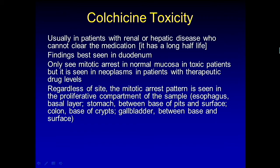The findings are best seen in the duodenum, presumably because it has the most turnover. The important thing is that you only see the cool mitotic arrest pattern in normal mucosa in toxic patients. But if a patient happens to have a neoplasm and is taking a therapeutic dose, you'll see just crazy stuff in the neoplastic process. Regardless of the site, you see the mitotic arrest pattern in the proliferative compartment — in the esophagus it's in the basal layer, in the stomach it's in that pocket between the pits and the surface, in the colon it's at the bottom, and in the gallbladder it's a little higher up. So you have to know where your proliferative compartment is.